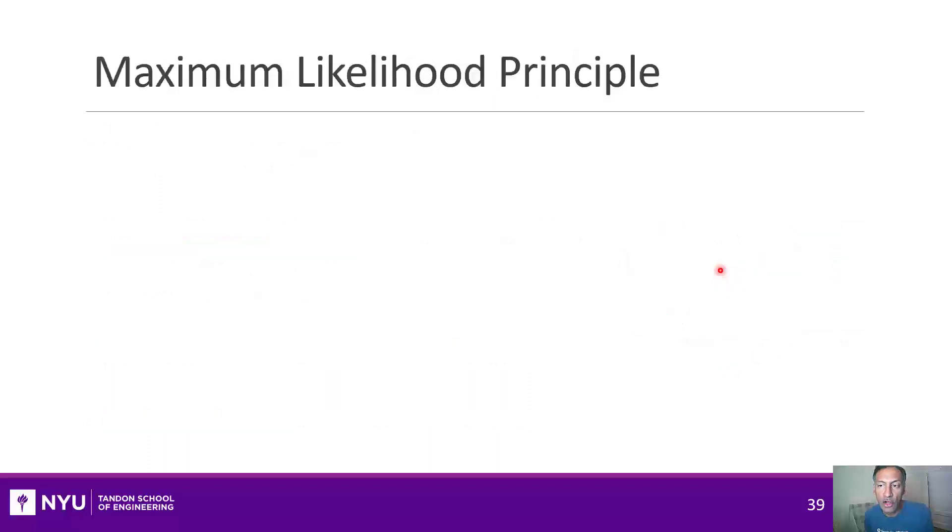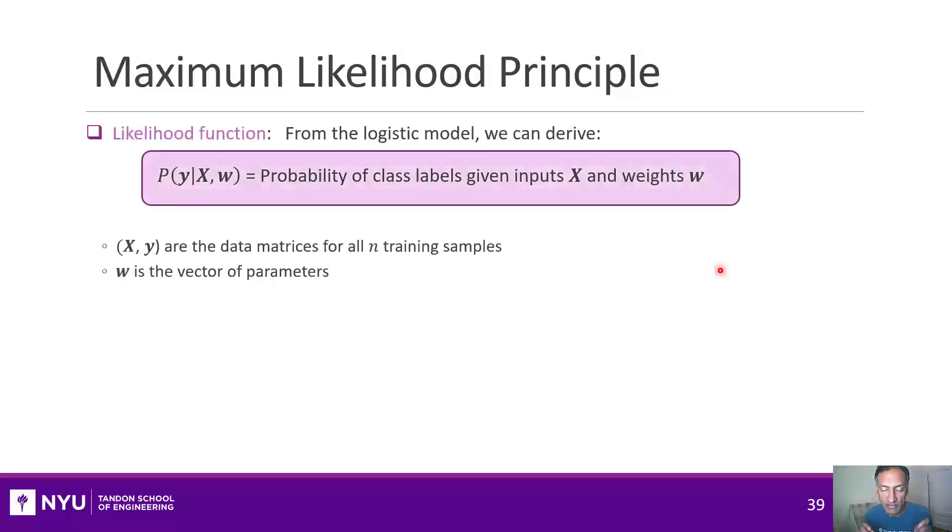So the key concept is what we call the maximum likelihood principle. You would have seen this definitely if you took the probability class and certainly in the detection and estimation class. But even if you have never heard of it, it's a pretty simple concept, at least in concept, in theory. I'm going to walk you through it. The idea of the maximum likelihood principle, and it applies very generally, it starts off with something called the likelihood function.